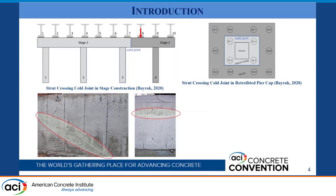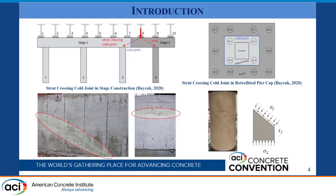Current design codes do not specify how to design for cold joints in disturbed regions. In these disturbed regions, the discontinuity introduces significant nonlinearity into the strain profile. However, we do know that a common design approach for these disturbed regions is the strut-and-tie method. It therefore becomes important to investigate the strength of a strut crossing a cold joint.